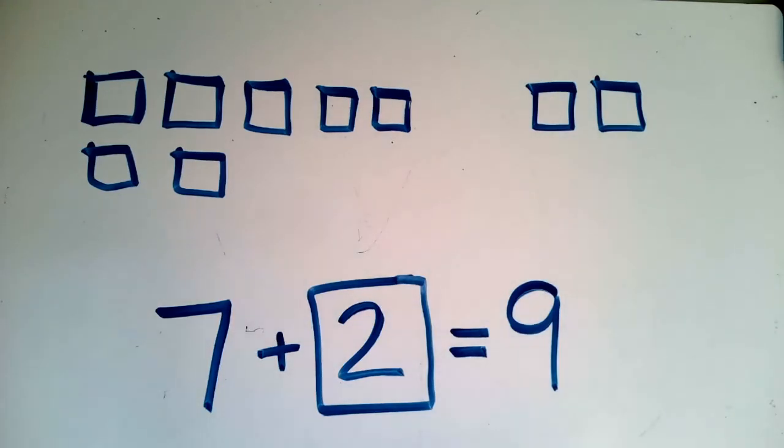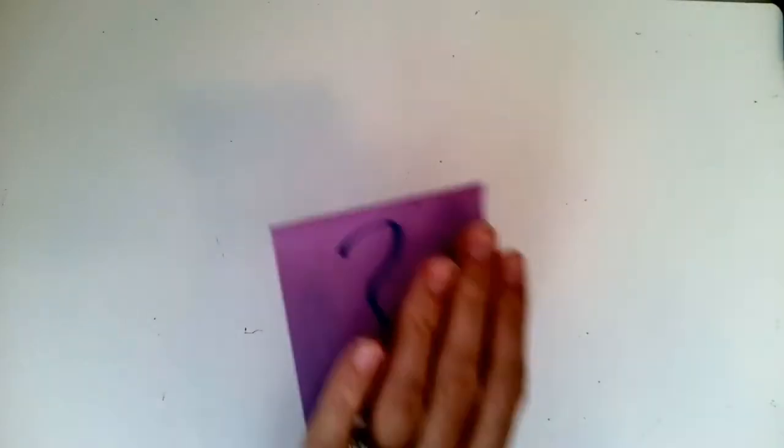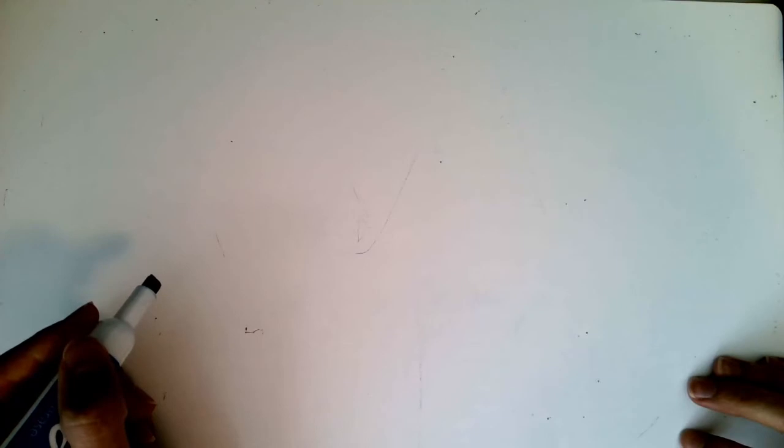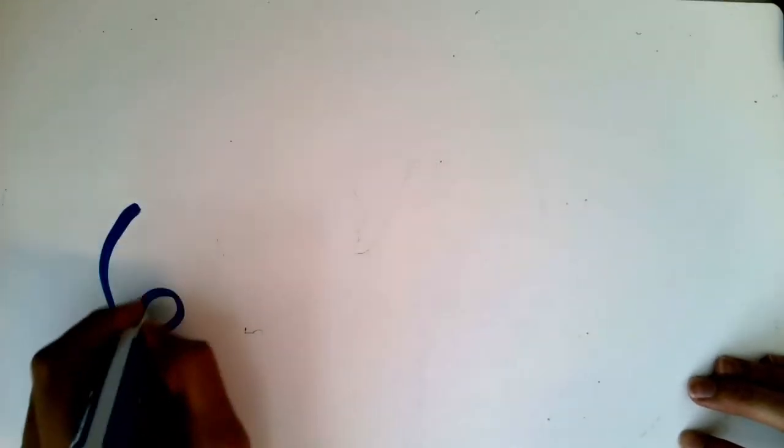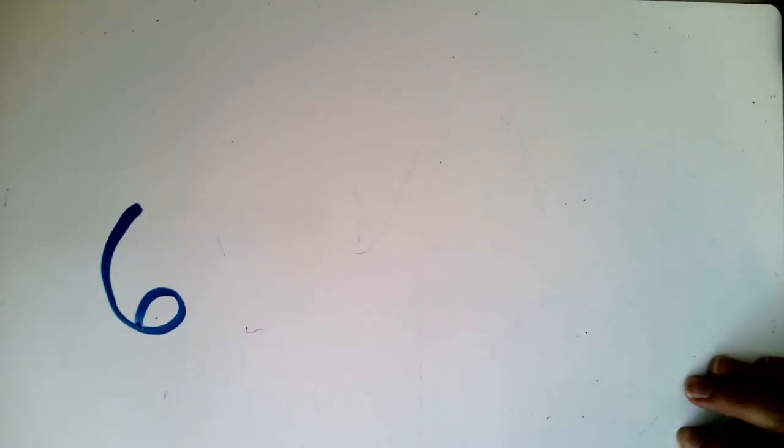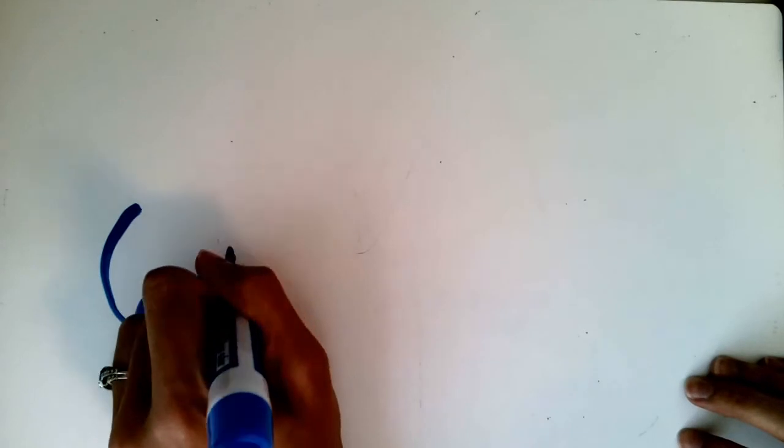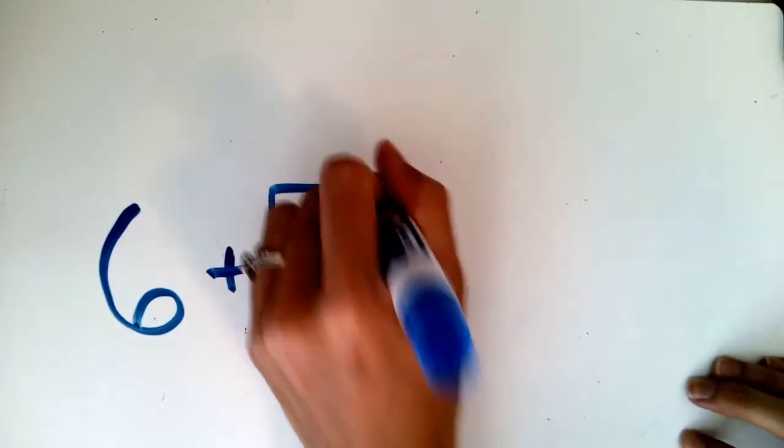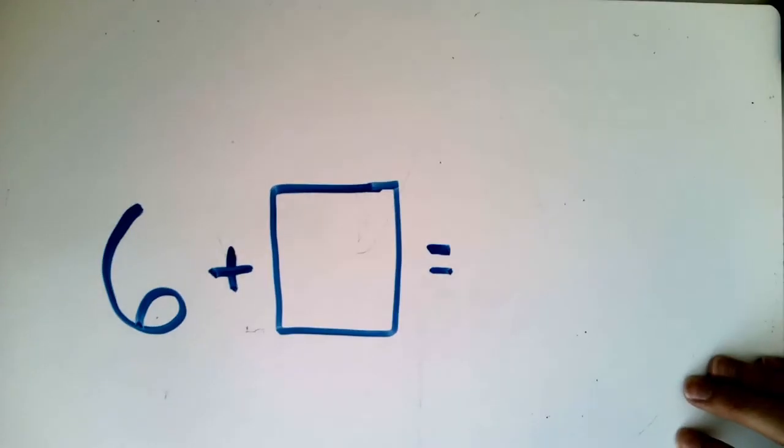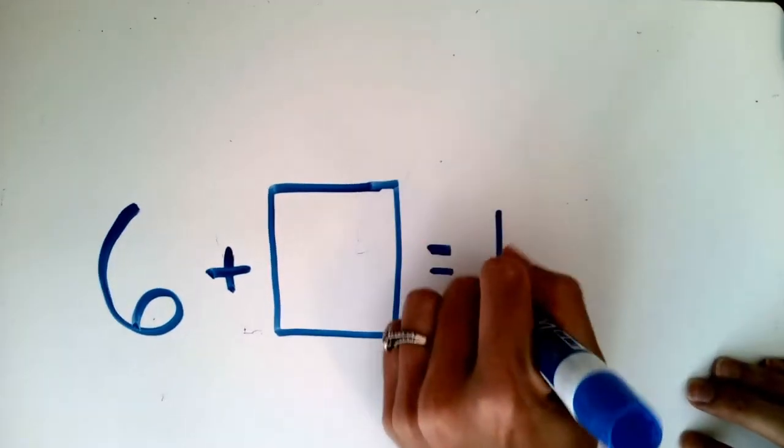Give yourself a pat on the back for that. Let's continue on. Let's practice some more unknown parts, our missing parts. Let's see if you can figure one out on your own on your board. Let me tell you my own story. Zoe had six fish. She had six pet fish. But her brother brought her some more. Then she had 10 fish. How many did her brother bring her?